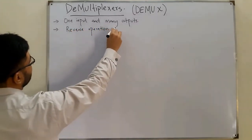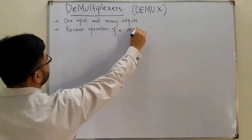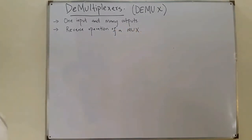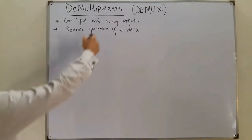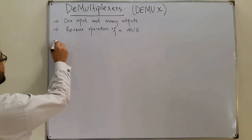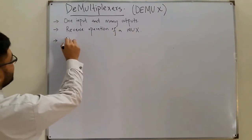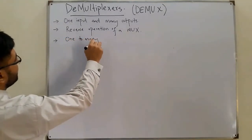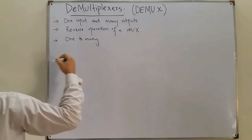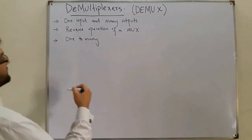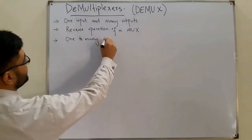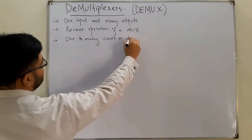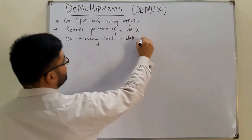The demultiplexer does the reverse operation of a multiplexer. It is also called a one-to-many circuit, or a data distributor.